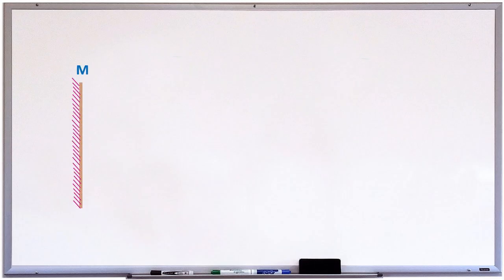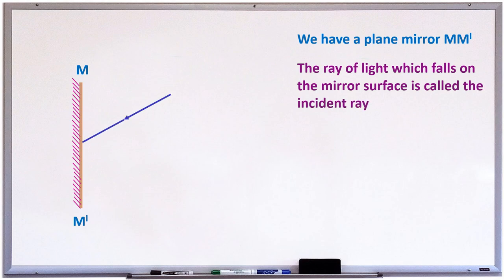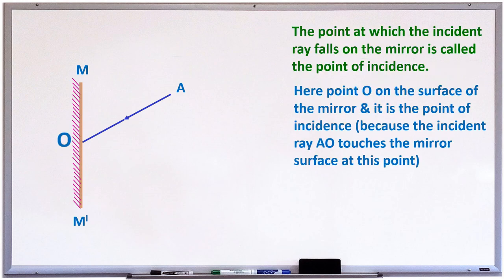Yesterday we discussed that a plane mirror is represented like this, and here M-M' is a plane mirror. The ray of light which falls on the mirror surface is called the incident ray. Here, OA is the incident ray. The point at which the incident ray falls on the mirror is called the point of incidence. Here, O is on the surface of the mirror and it is the point of incidence because the incident ray AO touches the mirror surface at this point.